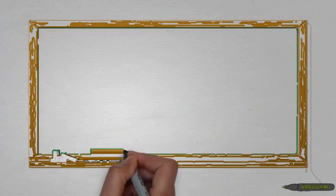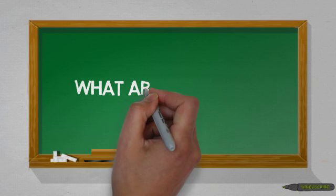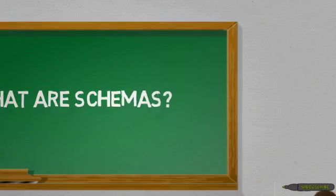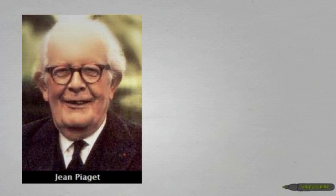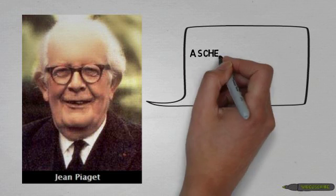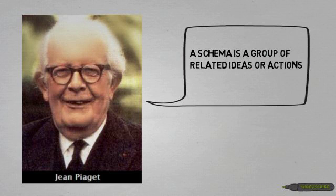Before getting into more details about this theory, let's first take a look at what the word schema means in the field of psychology. From Piaget, we learned that a schema is a group of related ideas or actions.